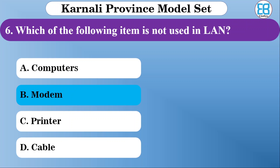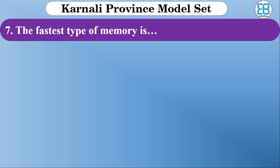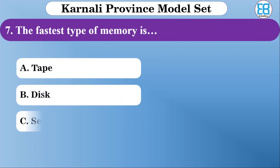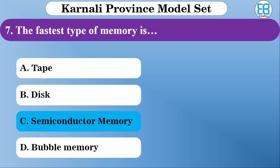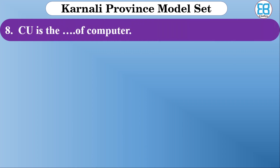What is the fastest type of memory? The options are tape, semiconductor memory, and bubble memory. The correct option is semiconductor memory.